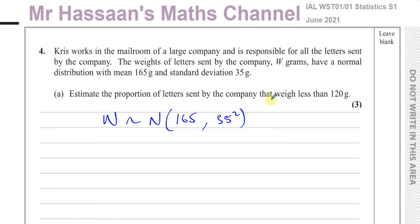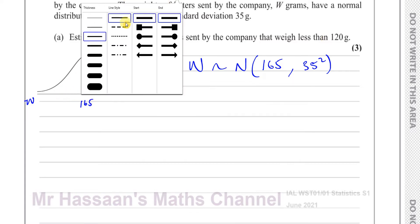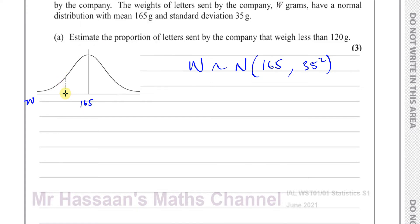Estimate the proportion of letters sent by the company that weigh less than 120 grams. I'm going to use the normal distribution bell curve to show how to answer. The mean is 165, right in the middle, and 120 grams will be somewhere to the left of the mean.